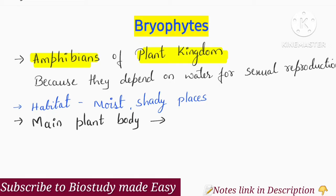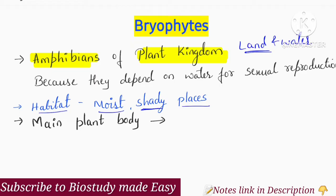These are amphibians — they live both on land and water. They inhabit moist, shady places. However, they depend on water for sexual reproduction. So this is why bryophytes are called the amphibians of the plant kingdom.